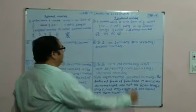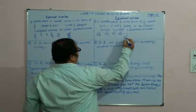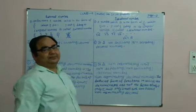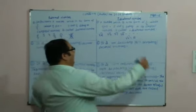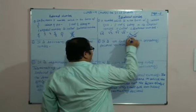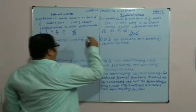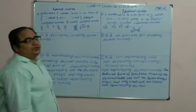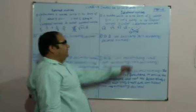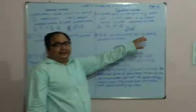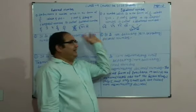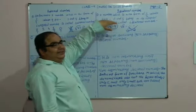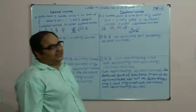But when you take root 4, root 4 is equal to 2. It gives a perfect number, so it is not an irrational number — it is part of the rational numbers. You can write root 4 equals 2. So when you get the square root of a number and it is not a perfect square, that is why it is called an irrational number.